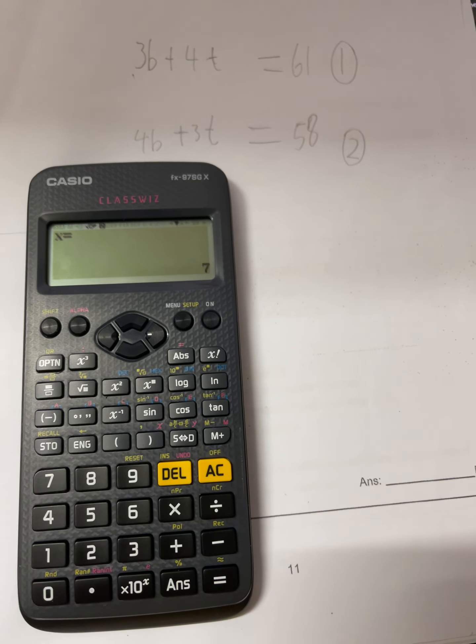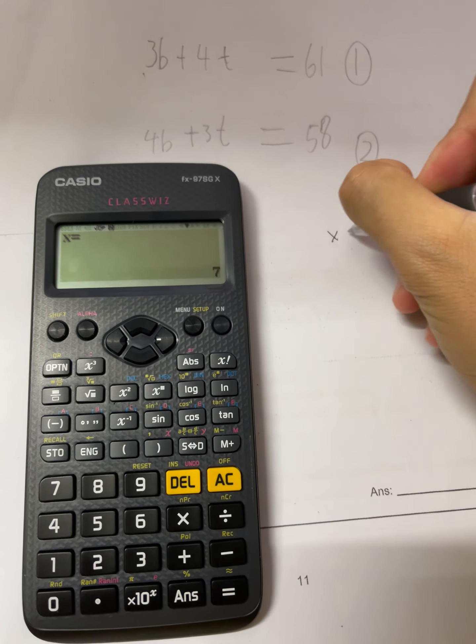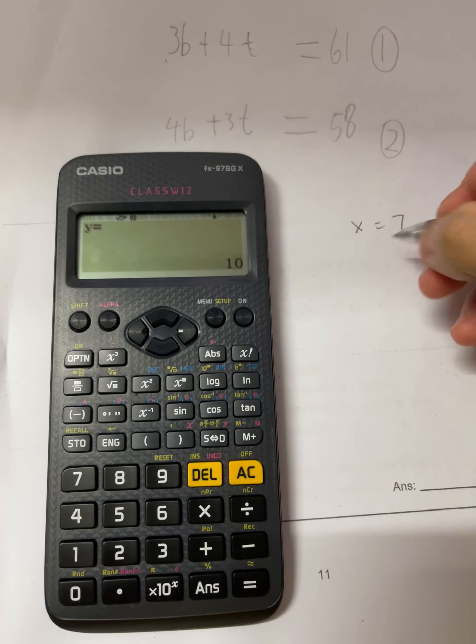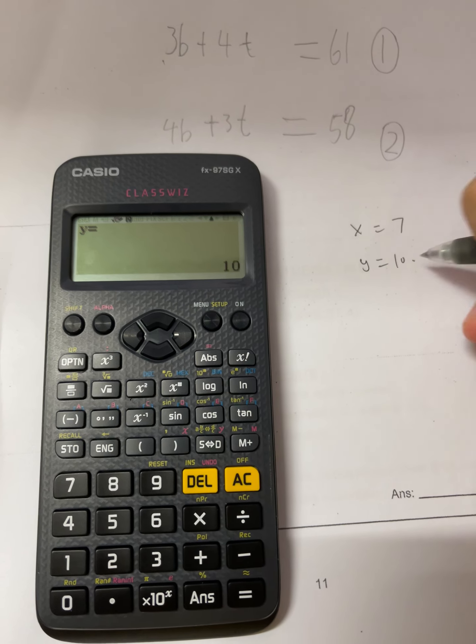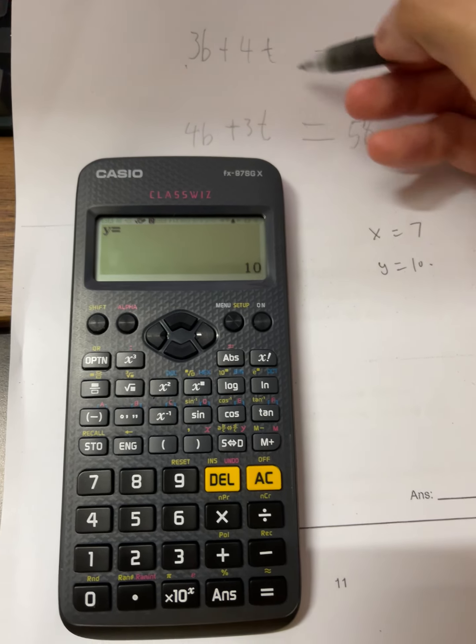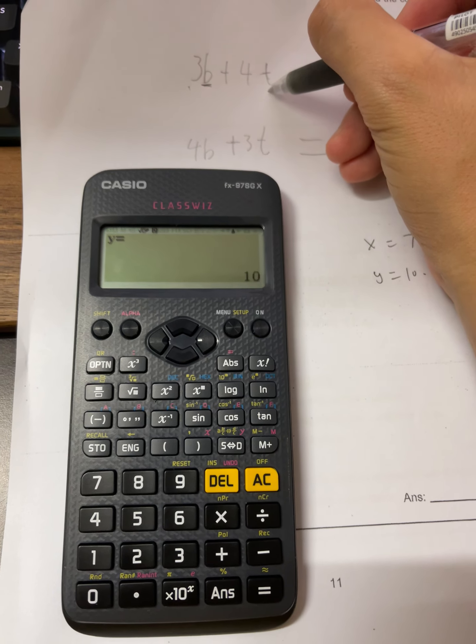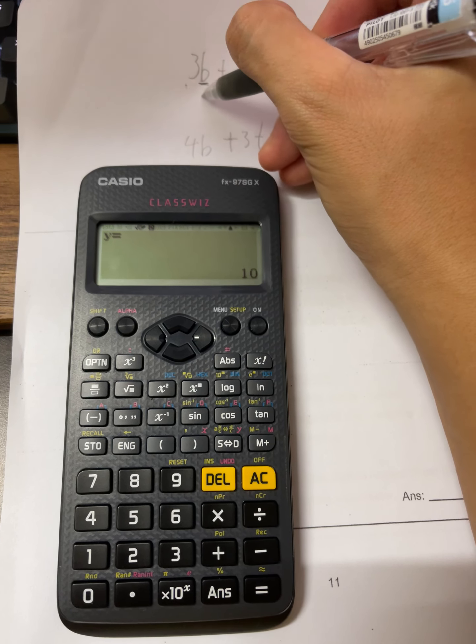...is equal to seven. So I write down x equal to seven from the calculator, y is equal to 10. So this means your b is x, this is your t is y.